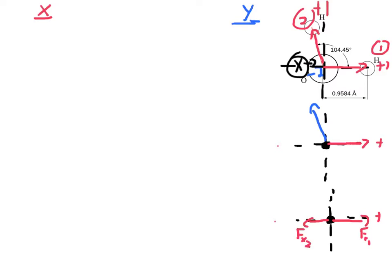Force fx2, the force of this hydrogen that's pulling up this way, has a little x-component here. If I draw in a little right triangle, I've got a y-component and an x-component to deal with. There's the x-component, and my y-component looks something like this — fy2.